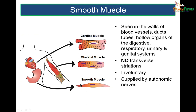Smooth muscle is made of fusiform fibers present in the walls of ducts, blood vessels, genital systems, cardiovascular system, digestive systems, and urinary genital systems. There are no transverse striations, and it is supplied by the autonomic nervous system.